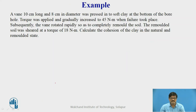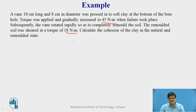Let us take an example. A vane 10 cm long and 8 cm in diameter was passed into a soft clay at the bottom of a borehole. Torque was applied and gradually increased to 45 Nm when failure took place. Subsequently, the vane was rotated rapidly to completely remold the soil. The remolded soil was sheared at a torque of 18 Nm. Calculate the cohesion. Two conditions are given: natural condition and remolded condition.